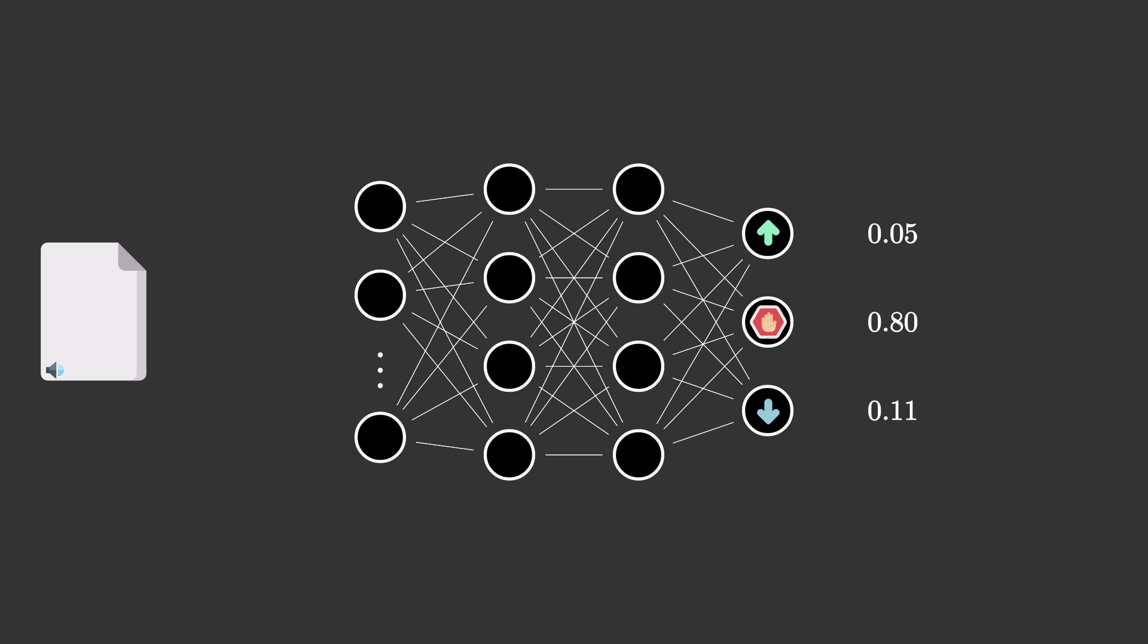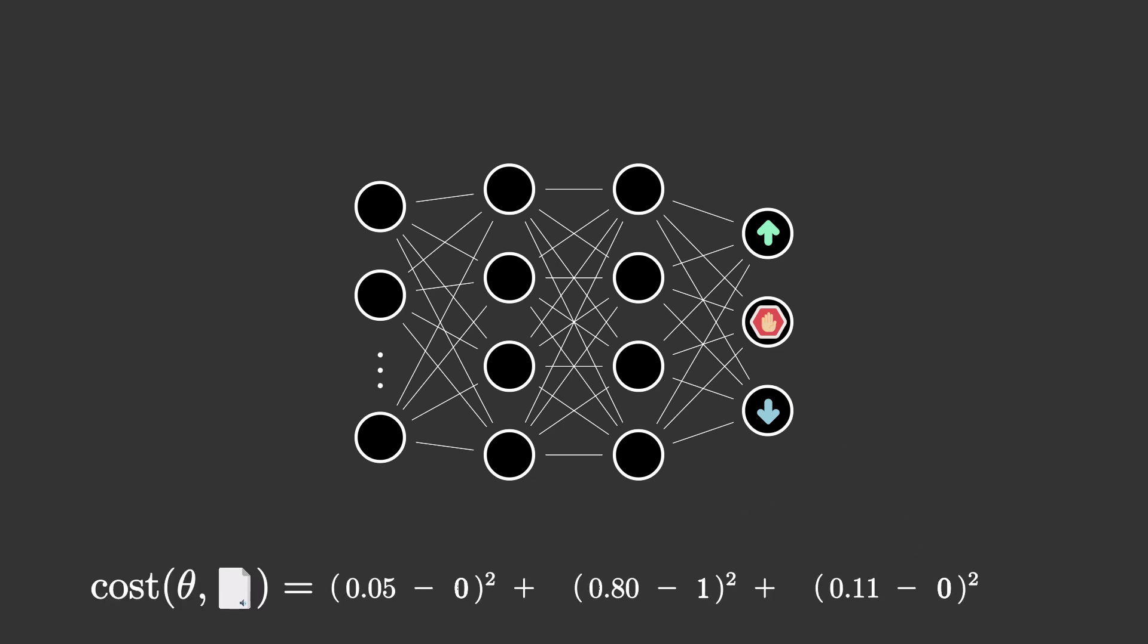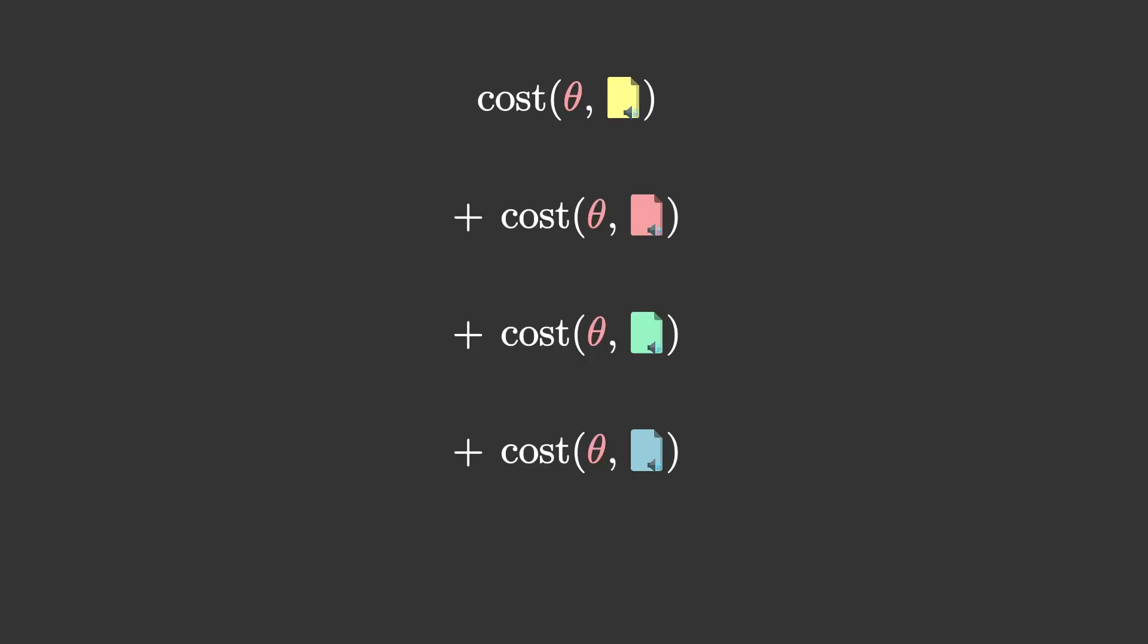Then, for each example in the dataset, you compare the output of the neural network to the ideal output. Take the difference, square it, and then take the sum, and you get the cost of a single training example. By taking the sum over all training examples, you get the overall cost function.